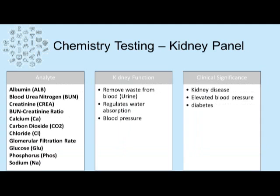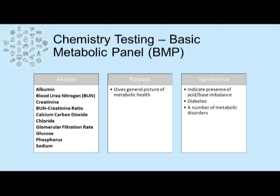Kidney panels include albumin, blood urea nitrogen, creatinine, the ratio of blood urea nitrogen to creatinine, calcium, carbon dioxide, chloride, glomerular filtration rate, glucose, phosphorus, and sodium. To get a more general idea of a patient's general health, a basic metabolic panel can be ordered, which includes albumin, blood urea nitrogen, creatinine, the BUN-to-creatinine ratio, calcium, carbon dioxide, chloride, GFR, glucose, phosphorus, and sodium.